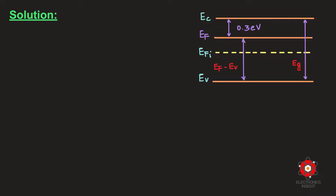Drawing the energy band diagram: Ec is the bottom edge of the conduction band and Ev is the topmost edge of the valence band. The Fermi level Ef is drawn approximately 0.3 eV below Ec. The intrinsic Fermi level Ei lies exactly at the middle of the band gap.